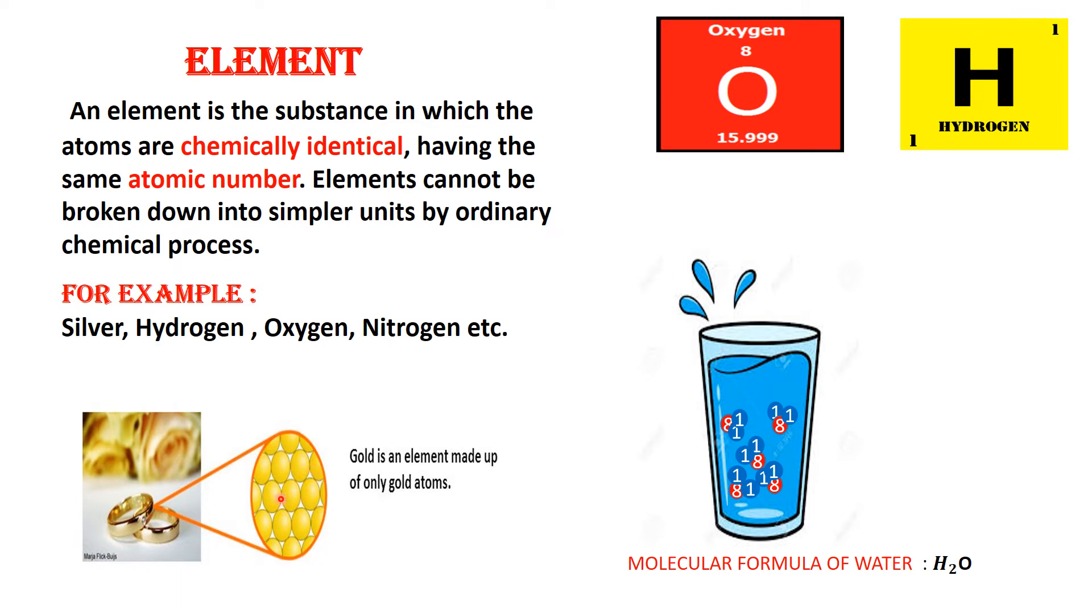Now, all these atoms are gold atoms. But how do we know that these are gold atoms? Because all these atoms are chemically identical. It means they have the same chemical properties and they have the same atomic number. It means the number of protons of all these atoms is same which belong to the element gold. So, gold is an element that is made up of only gold atoms.